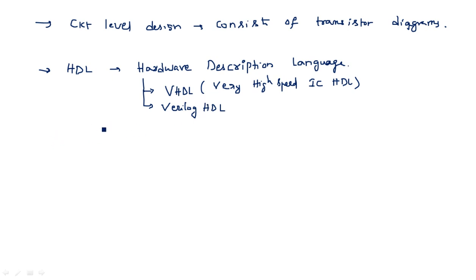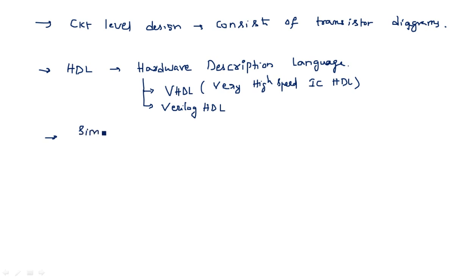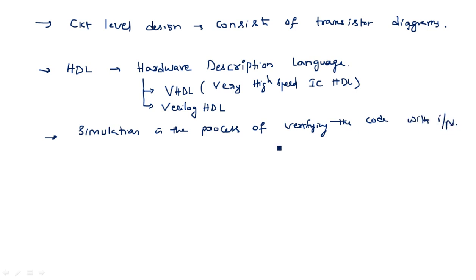Using VHDL or Verilog HDL, we write an HDL code describing the behavior of the circuit. Once the code is completed, the next task is to simulate. Simulation is the process of verifying the code with inputs — giving inputs and running to get the output. For example, if designing an AND gate: inputs 0,0 → output 0; 0,1 → output 0; 1,0 → output 0; 1,1 → output 1. That type of simulation we need to run.